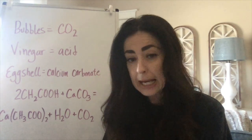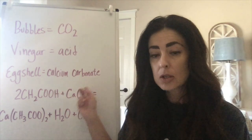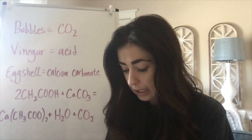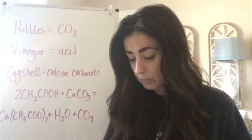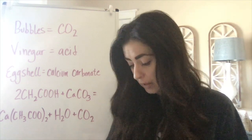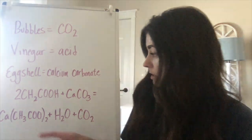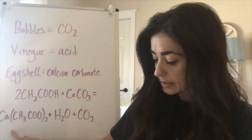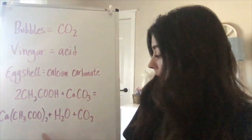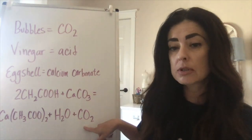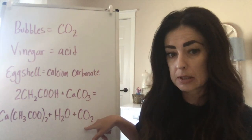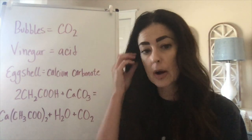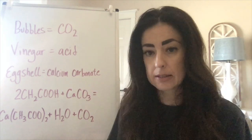The eggshell is made up of calcium carbonate. So when you put the egg into the vinegar, there's a chemical reaction — the vinegar reacts with the calcium carbonate on the eggshell and what it produces is calcium acetate. You can see the chemical equation for that, and it also produces water and CO2, which is the part that we're able to see. Eventually you start to see white bubbly stuff on the surface of the water, and that is the calcium acetate.